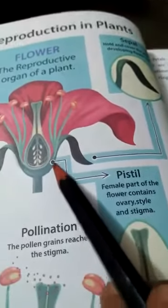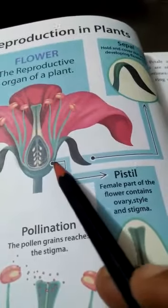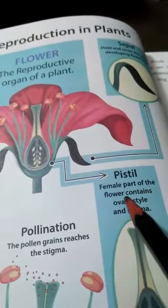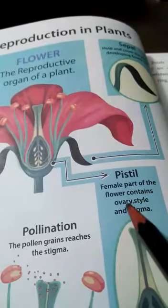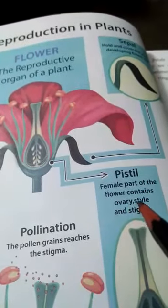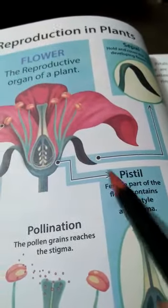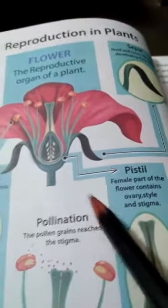Next is the pistil. The pistil is the female part of the flower, containing the ovary, style, and stigma.